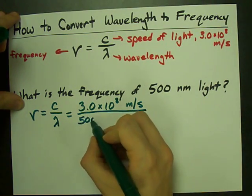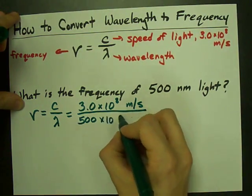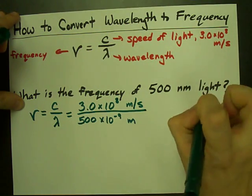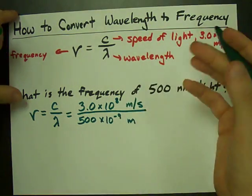I like to write that as 500 times 10 to the negative 9 meters. I convert my nano into a times 10 to the negative 9.